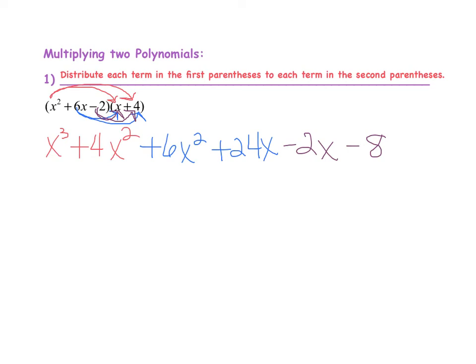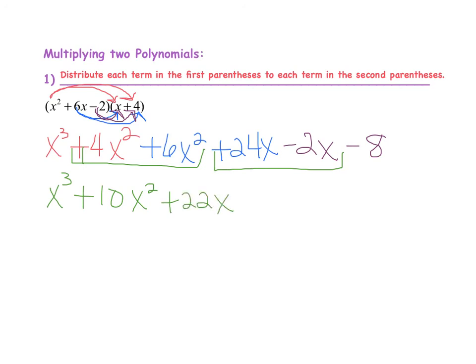Looking for like terms: there are no other x cubed terms, so I bring down x to the third power. For x squared, I have 4x squared plus 6x squared, which gives plus 10x squared. For x terms, I have positive 24x minus 2x, which gives plus 22x. And then I have minus 8. Checking over the expression, there are no more like terms, so I have simplified this polynomial expression.